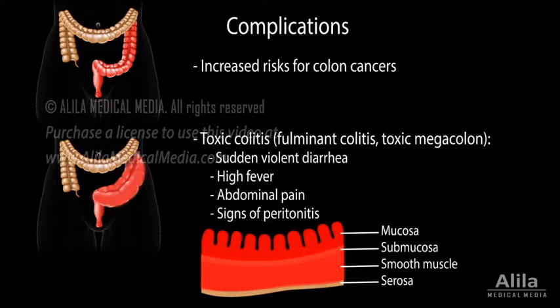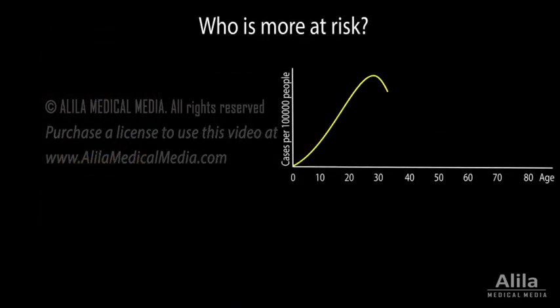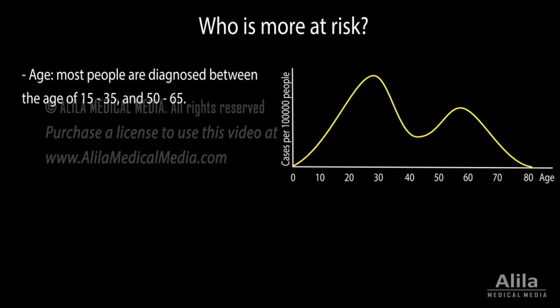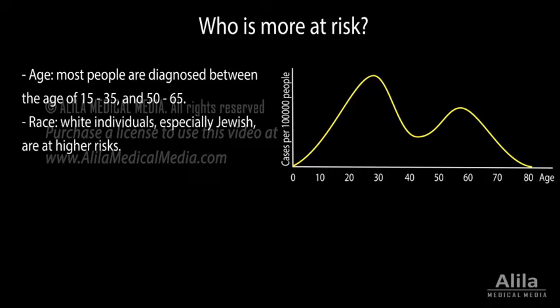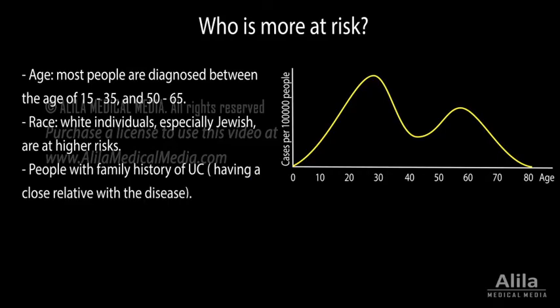This may lead to colon dilatation and sometimes perforation. UC has two incidence peaks: one major peak in teens and young adults, and a smaller peak after the age of 50. Some races are more susceptible than others, and family history of the disease is also a risk factor.